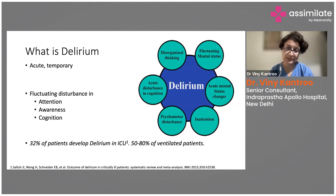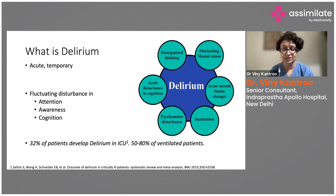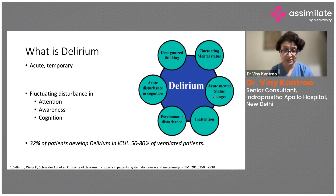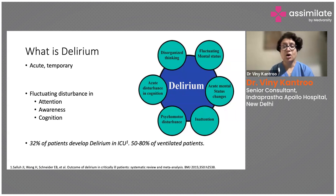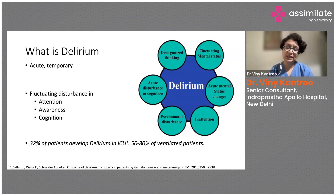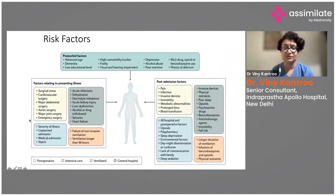In delirium there is fluctuating and acute mental status change, inattention — patients become confused and do not answer appropriately — and psychomotor disturbance. There can also be acute disturbance in cognition, such as stopping recognizing relatives or a familiar doctor. Disorganized thinking is also part of delirium.